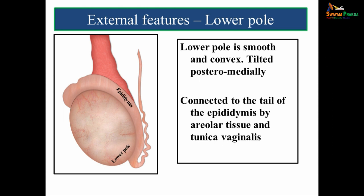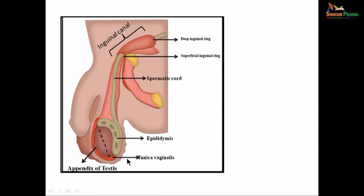The lower pole is smooth and convex. It is tilted posteromedially and is connected to the tail of the epididymis by areolar tissue and tunica vaginalis.